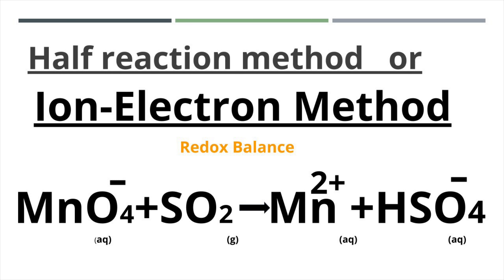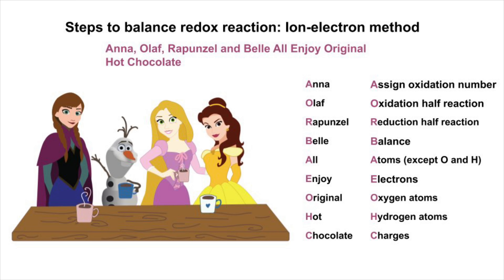Welcome to Aurora Chemistry for Everyone. MnO4⁻, permanganate ion, oxidizes sulfur dioxide into HSO4⁻, hydrogen sulfate. This reaction is a redox reaction. Let us see a very interesting mnemonic.